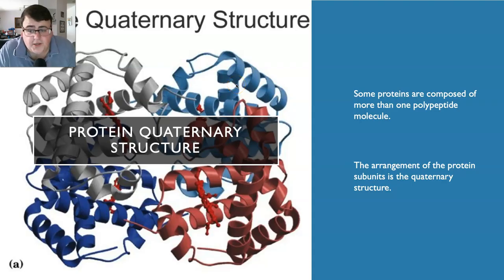The quaternary structure is when there's more than one polypeptide molecule making up a protein. In this diagram we have the red, dark blue, light blue and gray polypeptide molecules, all interacting with each other to form one protein. The arrangement of these polypeptide molecules is determined by the 3D shape in the tertiary structure - whether or not they're going to fit together. Basically, multiple polypeptide molecules coming together to form a protein.